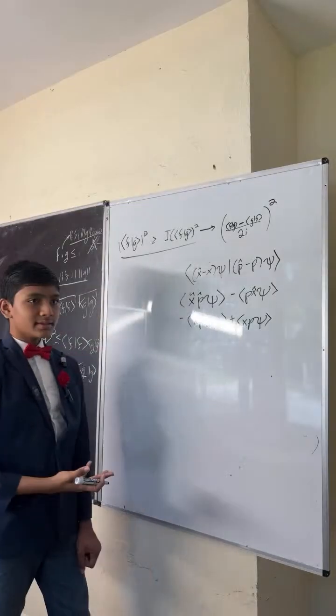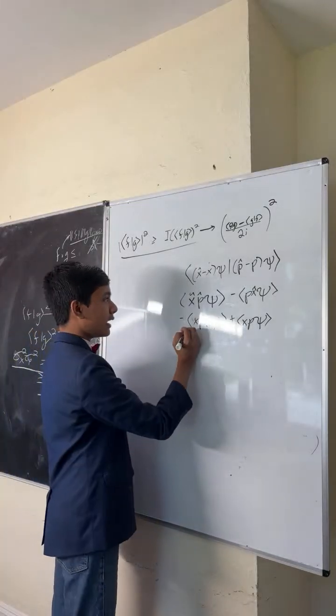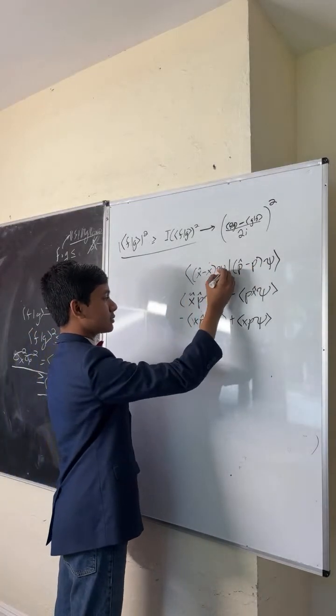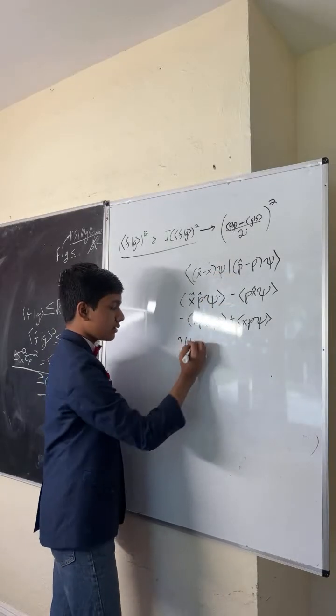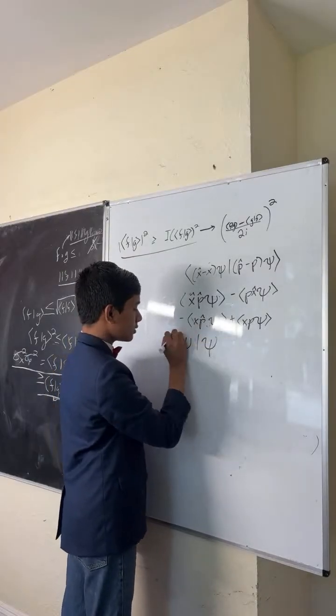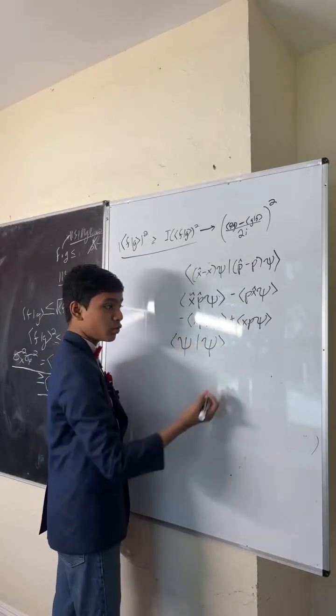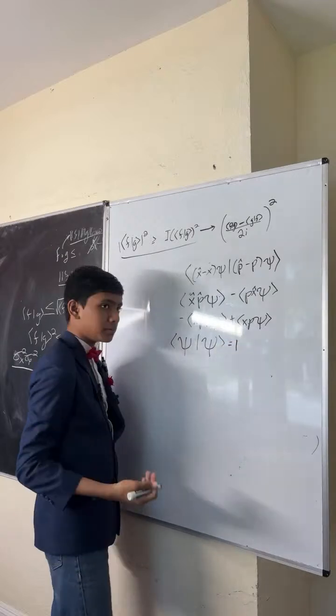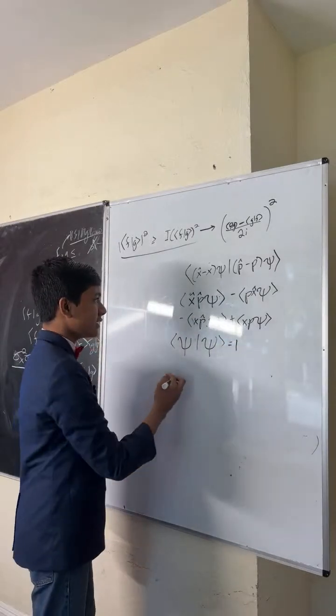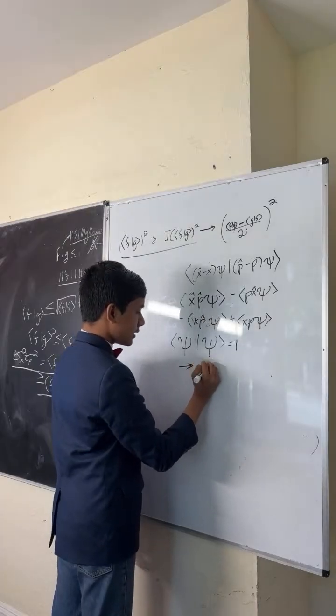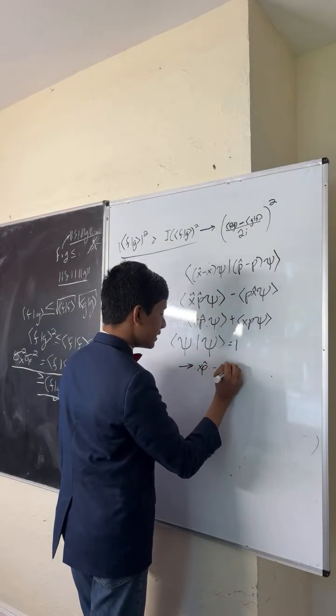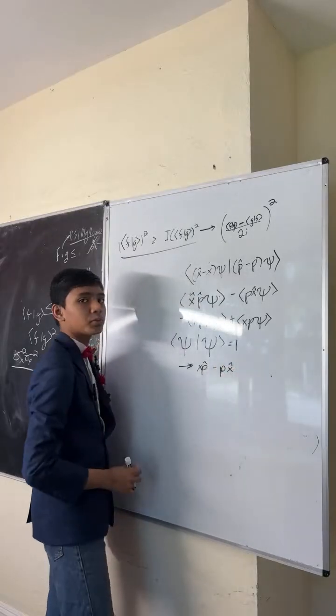And at this point, using the property that psi dot psi has to be 1 by Born's statistical interpretation, that forces this to just be equal to x hat p hat minus p x hat, which is the operators. So what do we do with this? Well, this is the commutator in its most general form.